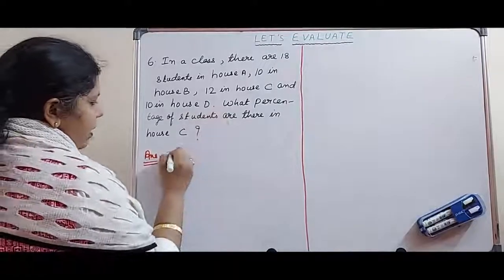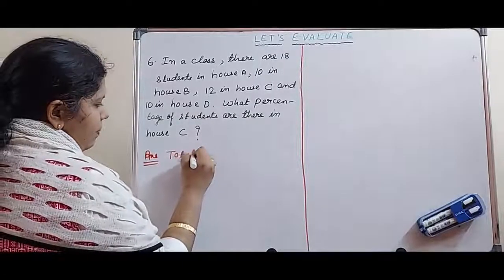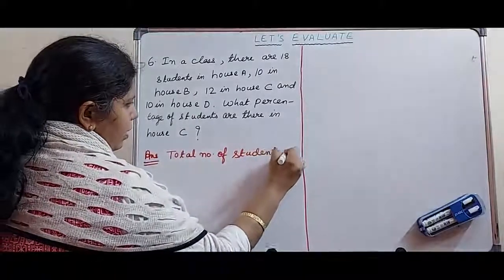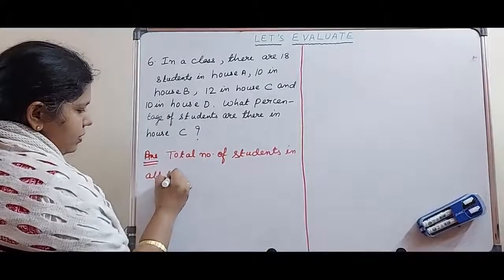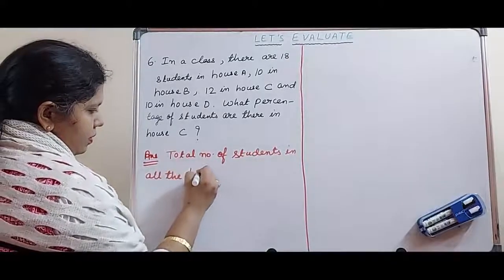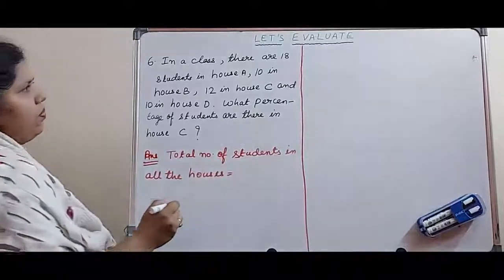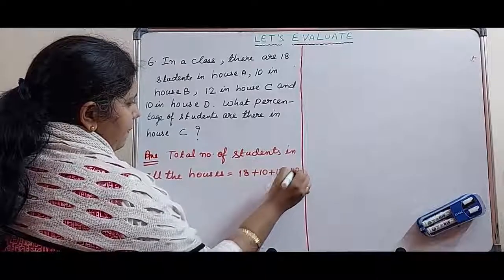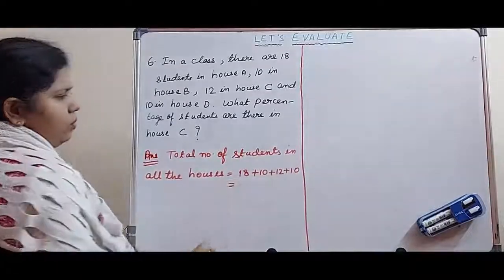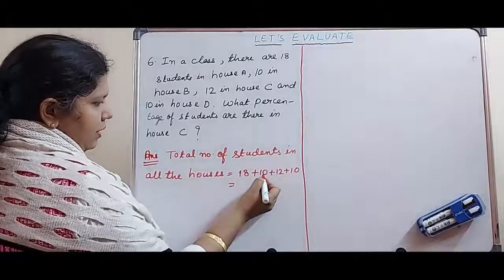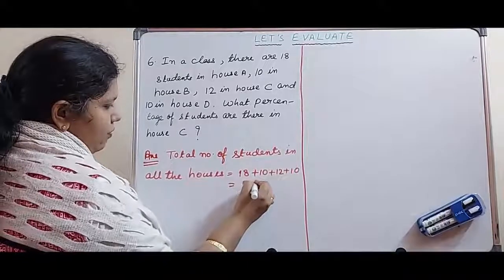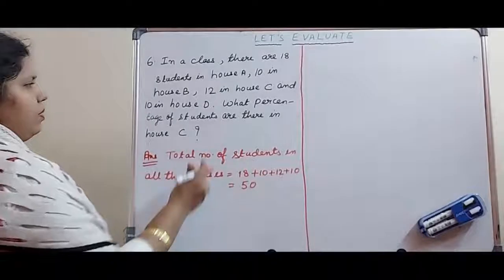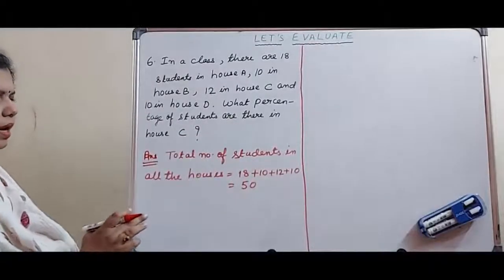First of all, we will find out total number of students in all the houses. That is equal to 18 plus 10 plus 12 plus 10. That comes to 18 plus 12 is 30, 30 plus 10 is 40, 40 plus 10 is 50. So total 50 students we are getting in all the houses. Now we have to find out the percentage of students which are there in house C.